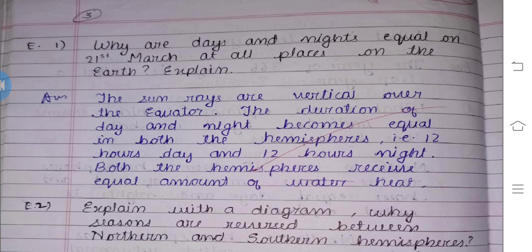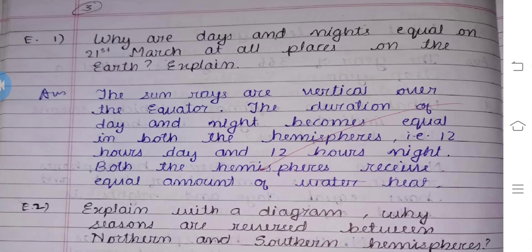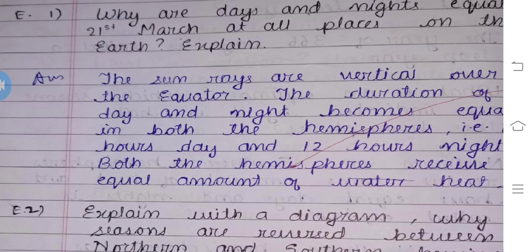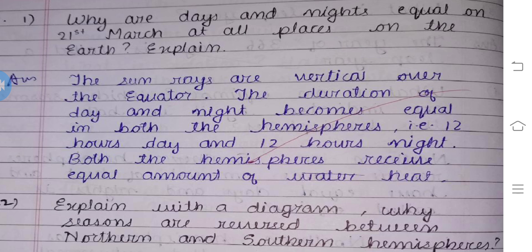It is vernal equinox. The sun rays are vertical over the equator on 21st of March, and the duration of days and nights become equal in both hemispheres — that is 12 hours day and 12 hours night. Both hemispheres receive equal amount of heat. That is why days and nights are equal on 21st of March at all places on the earth, in both the Northern and Southern Hemisphere.